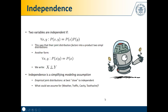It's very important to note that independence is a simplifying modeling assumption. In the real world, it's highly unlikely that actual joint distributions measured empirically would be independent. However, they can be very close to independent. Why is it very unlikely for real joint distributions to show independence?